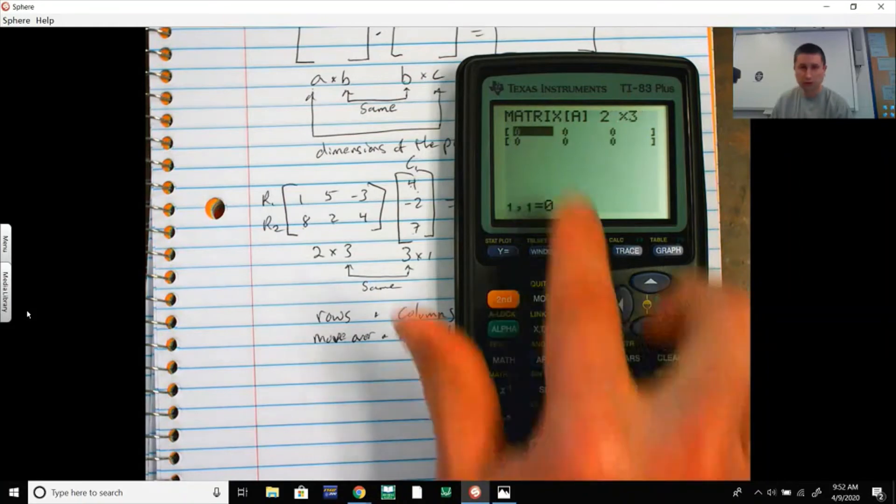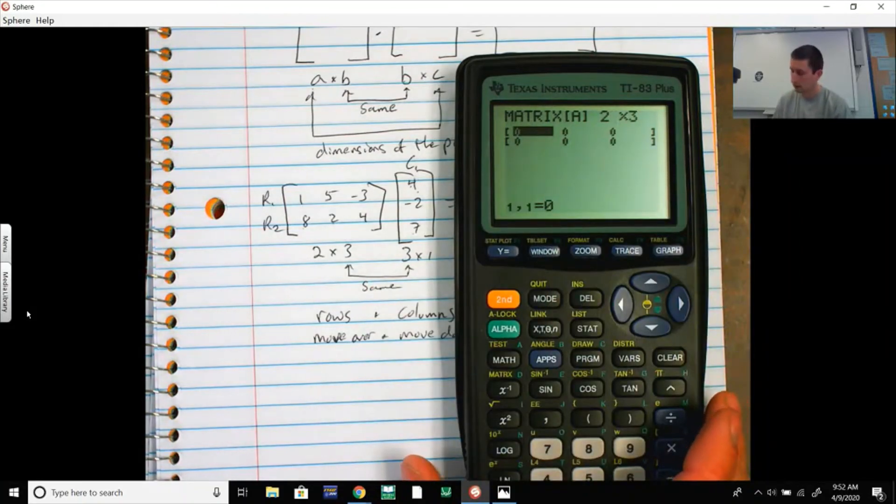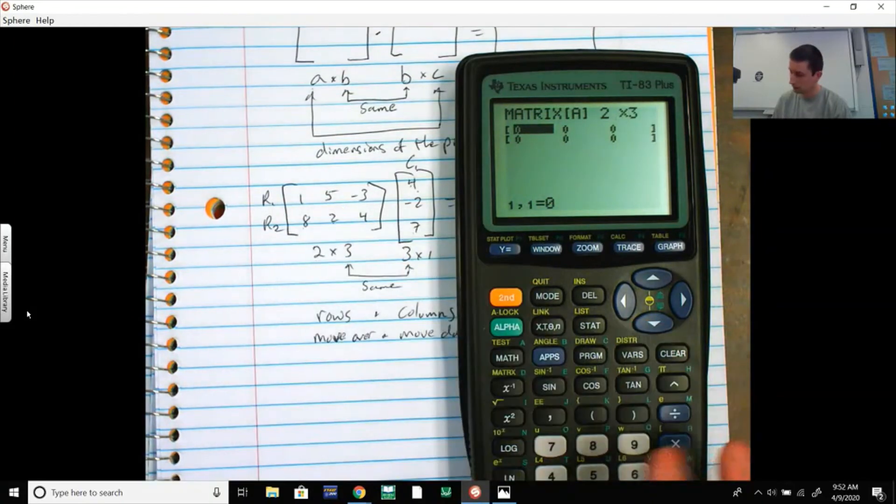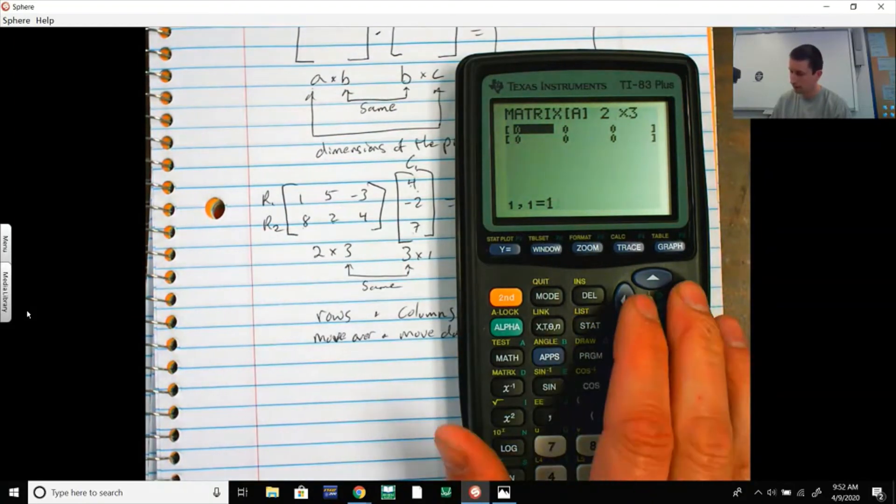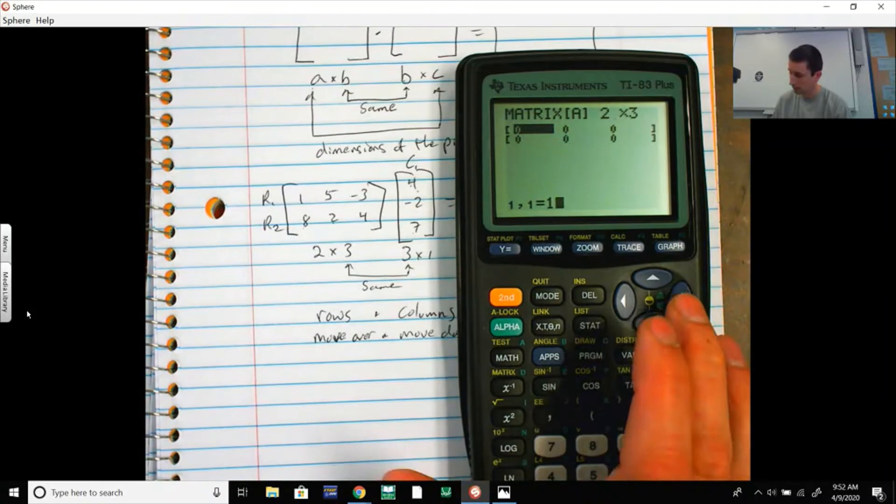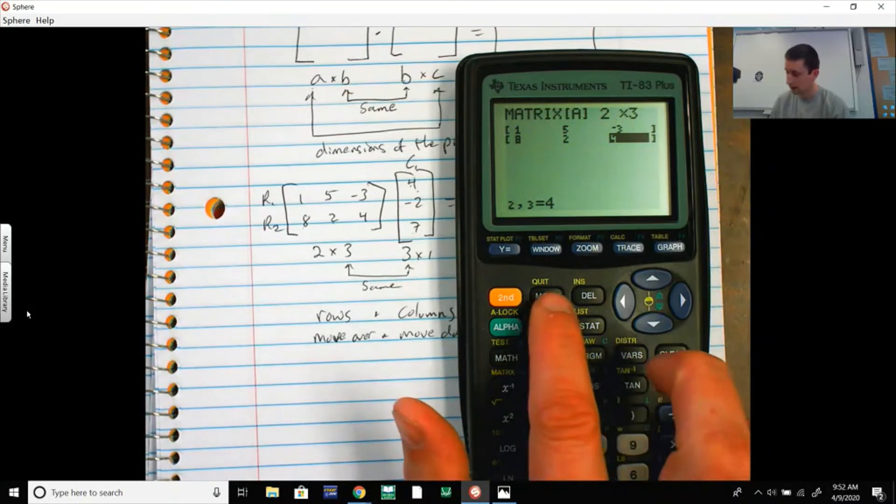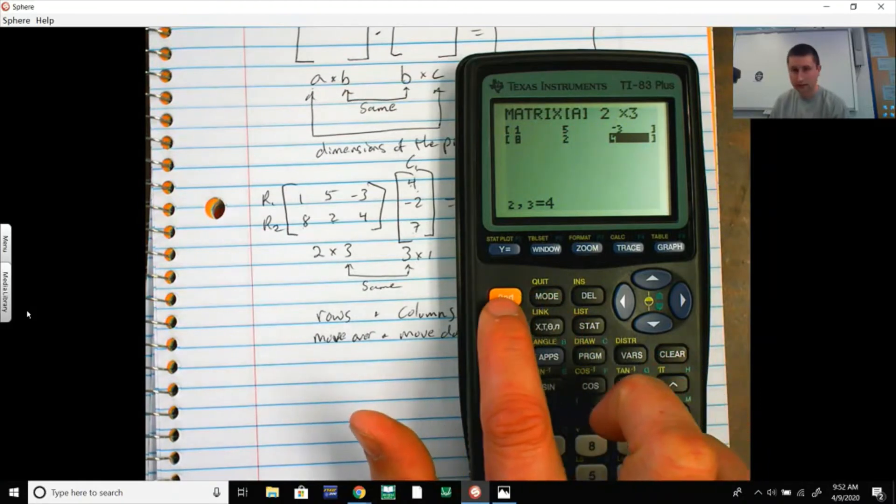Notice it brings me a 2 by 3 matrix. I'm going to enter these values here, pressing Enter between each one. So 1, or you can hit the right arrow maybe not press Enter, 1 Enter, 5 Enter, -3 Enter, 8 Enter, 2 Enter, 4 Enter. I've entered that matrix. I need to quit, I need to get out of here. Go back to the main menu, so second Mode.